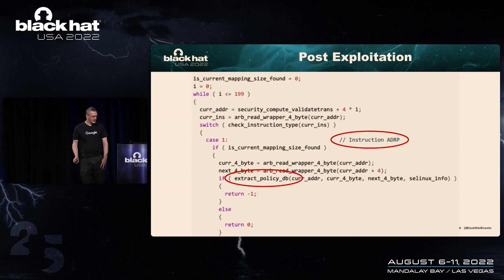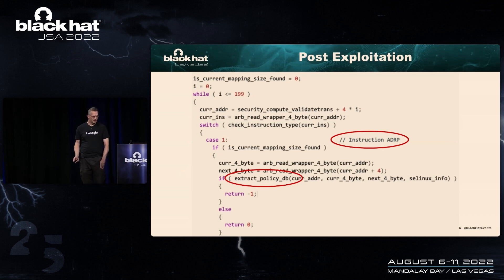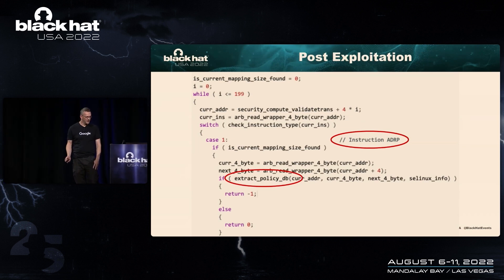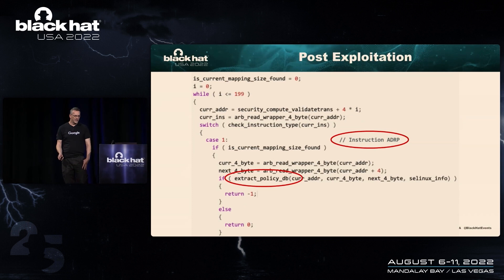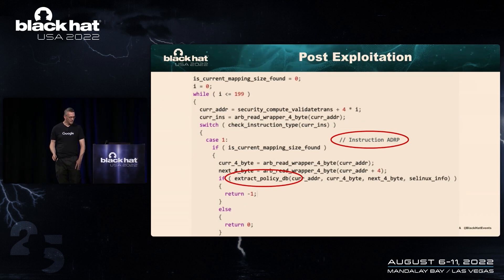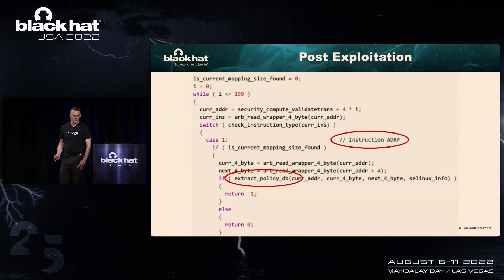For SELinux, the exploit code finds important static variables by analyzing instructions in SELinux-related kernel functions. They find an ADRP instruction — which if you know ARM assembler references some data — find the instruction, and you know the address of the data. The exploit code can then extract the SELinux policy, make some modifications to it, refresh and reload the database, and effectively SELinux has been made permissive.